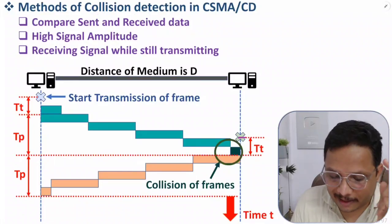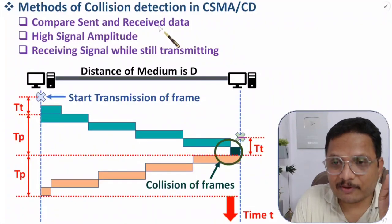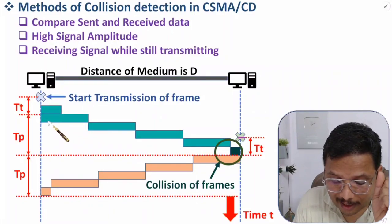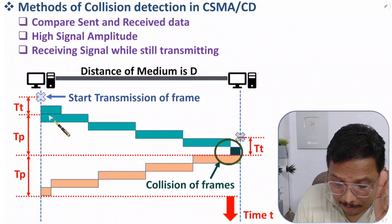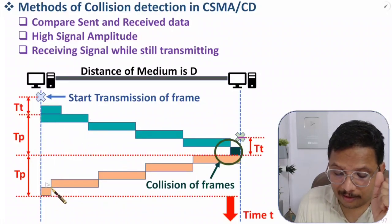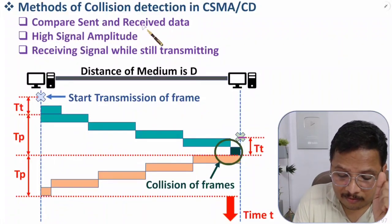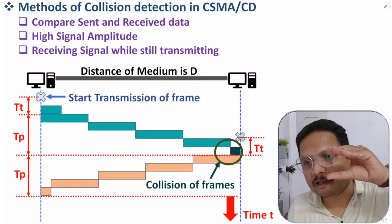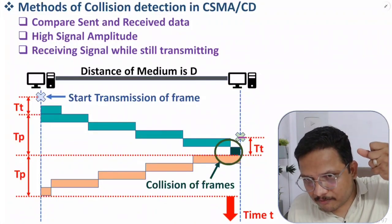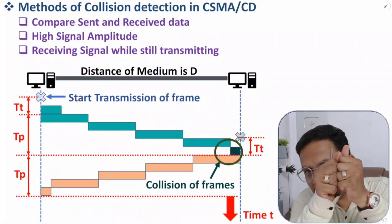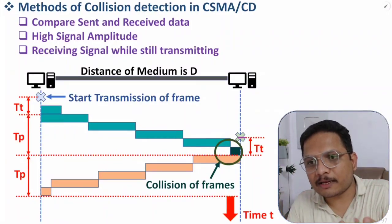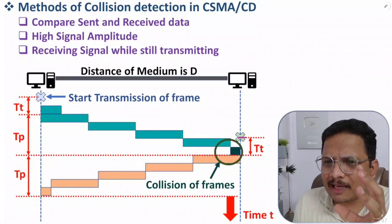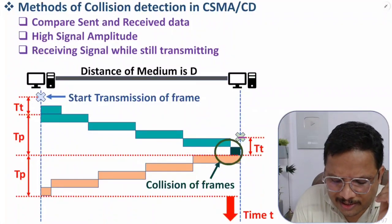The first method is to compare sent and received data. If a host sends one frame and then receives that same frame back, it compares both — if any difference is found, that indicates a collision occurred. However, this method is not generally used in practice because it takes more time.